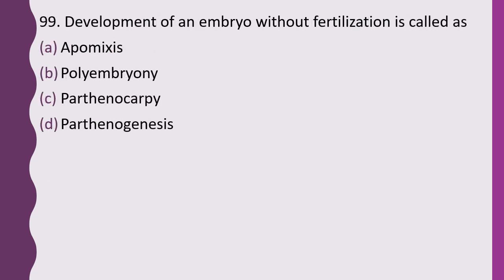Question 99. Development of an embryo without fertilization is called: apomixis, polyembryony, parthenocarpy, or parthenogenesis. The correct answer is option D, parthenogenesis.